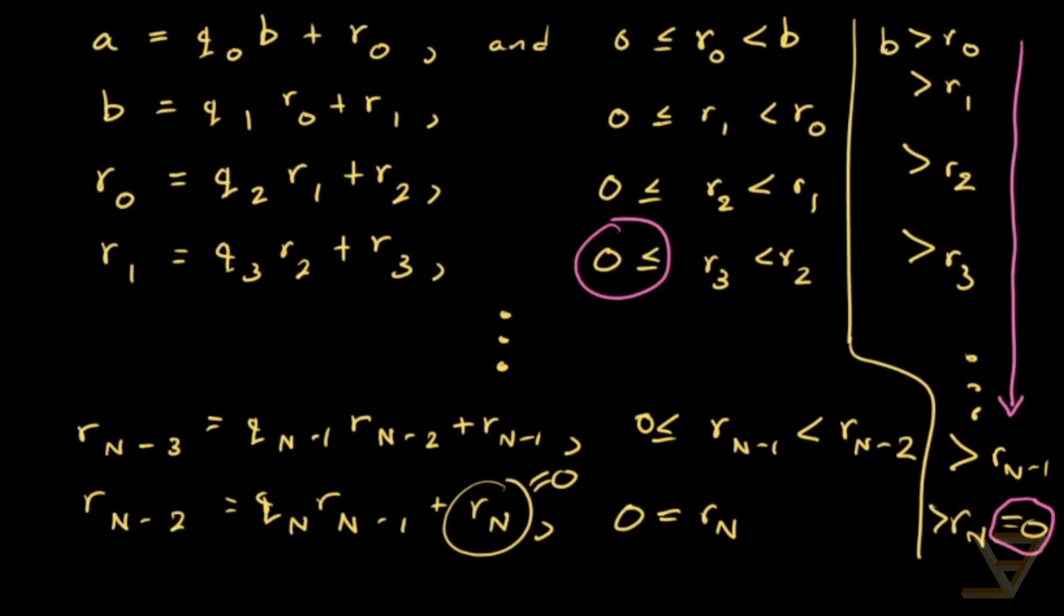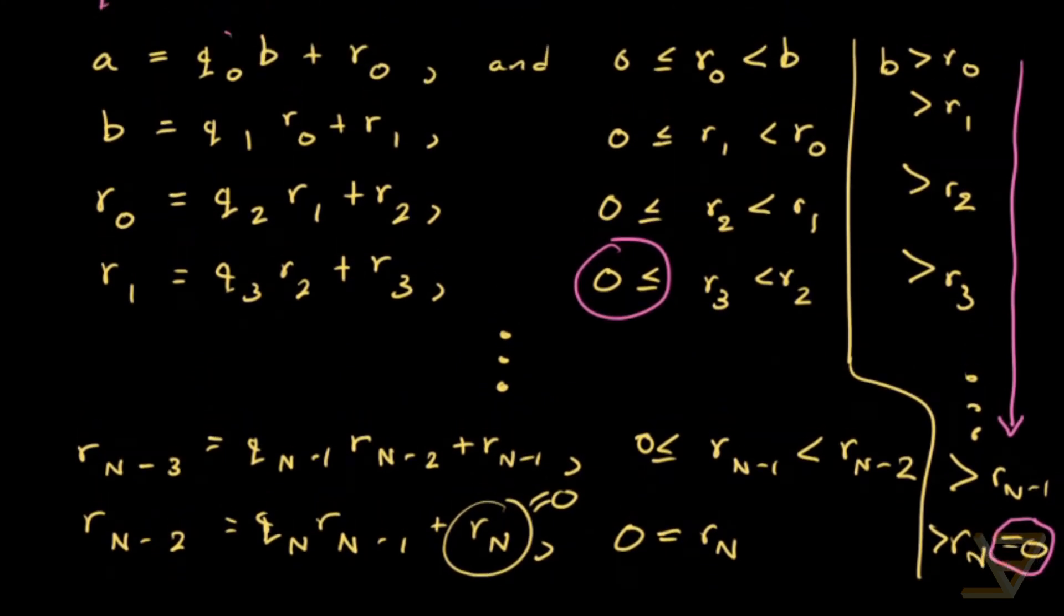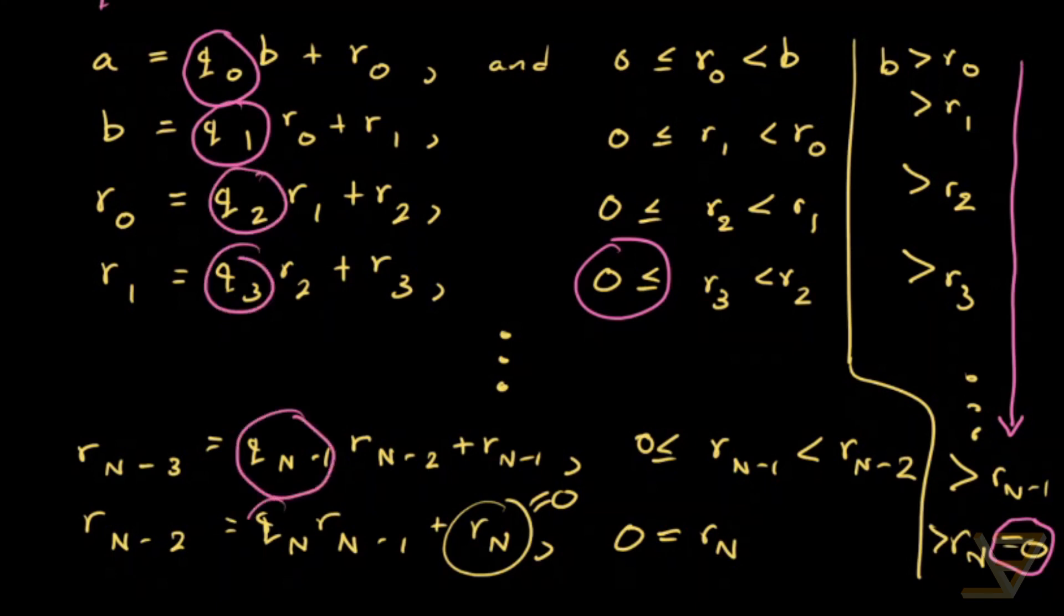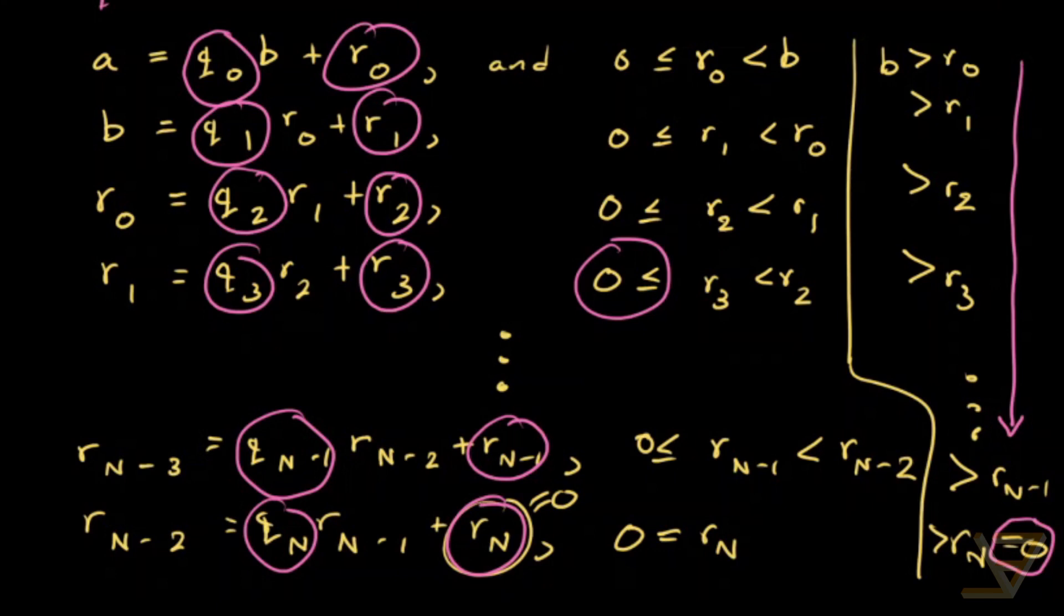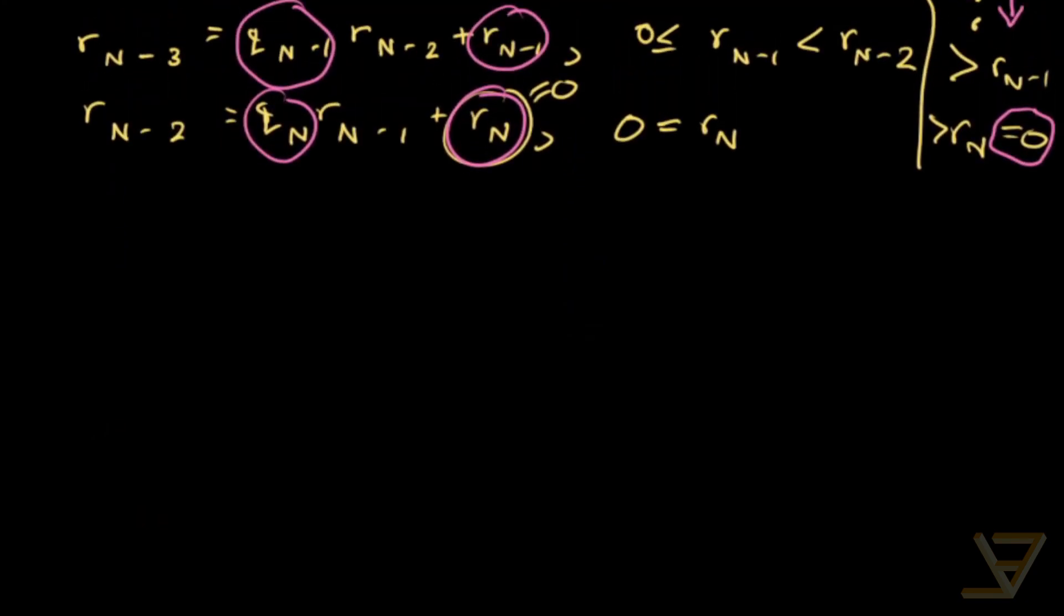Now why is this useful? This is useful because we can use these quotients. So there are n plus 1 quotients, q0 through qn and we can use these remainders as well. So take note of these quotients and remainders and I want to be pulling a bit of a rabbit out of a hat here. But what holds is, and we can prove this by just regular induction.